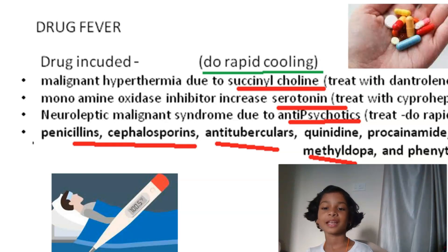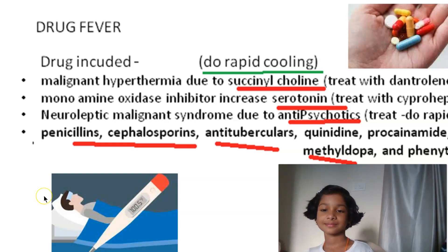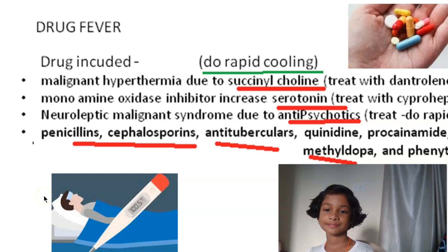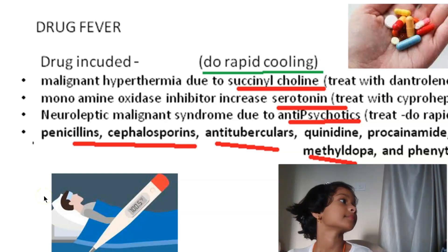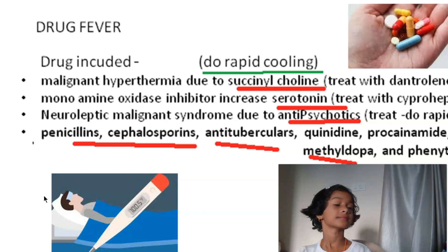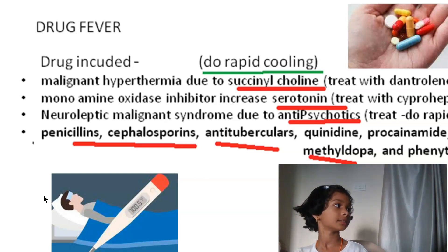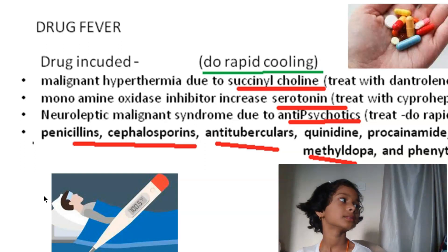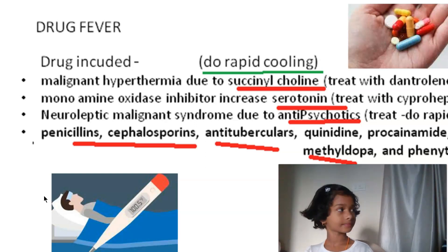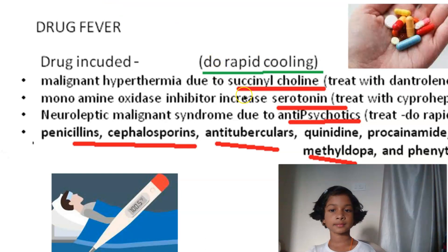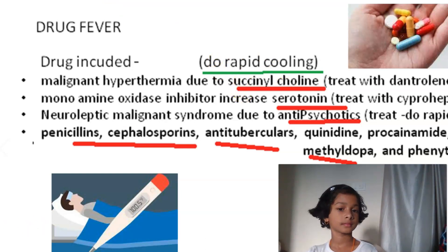Drug fever is caused because of drugs — medicines. Because of some medicines, body temperature will increase. Fever means body temperature will be more, and it is happening because of some drugs. Do you know the names of the drugs which cause this kind of issue?